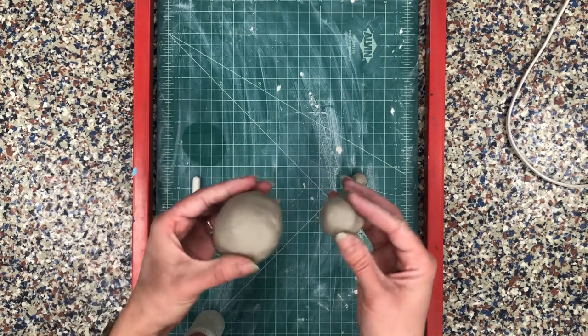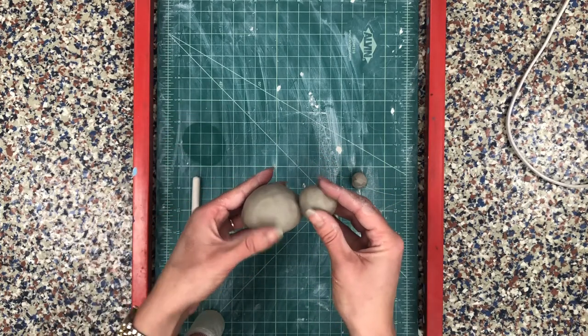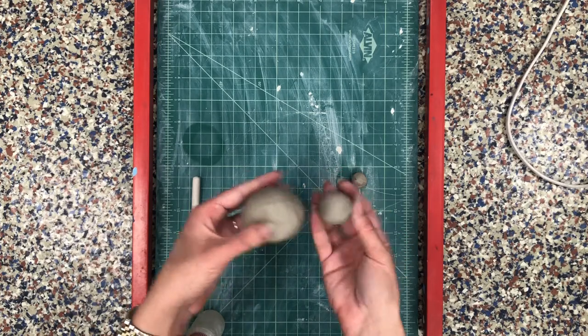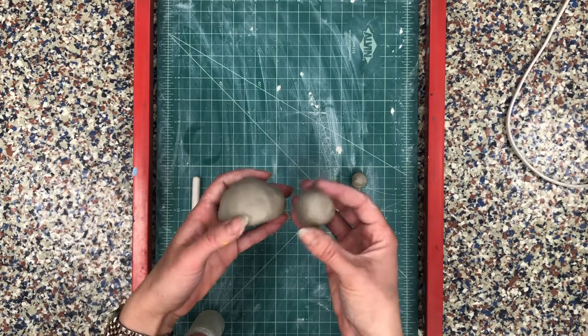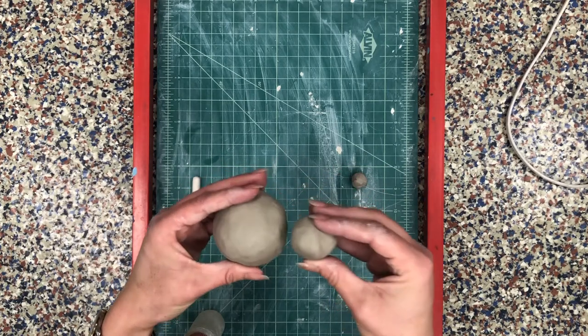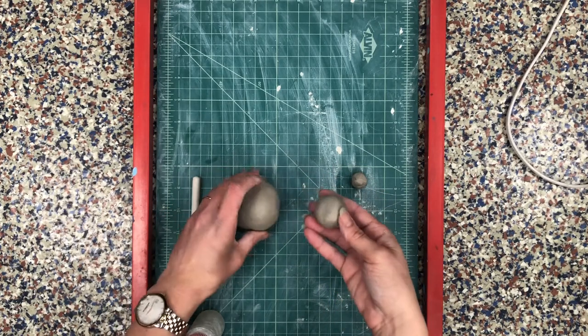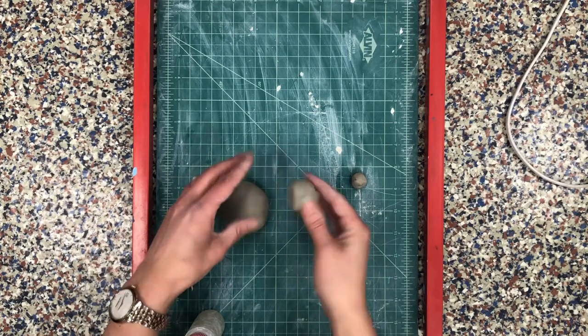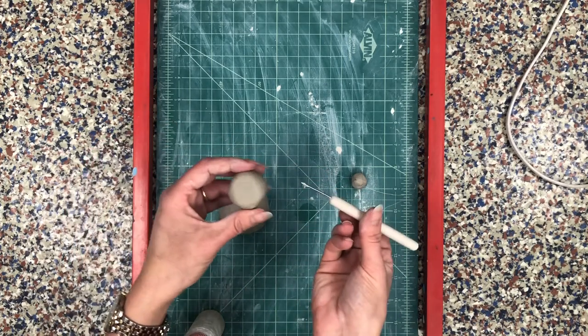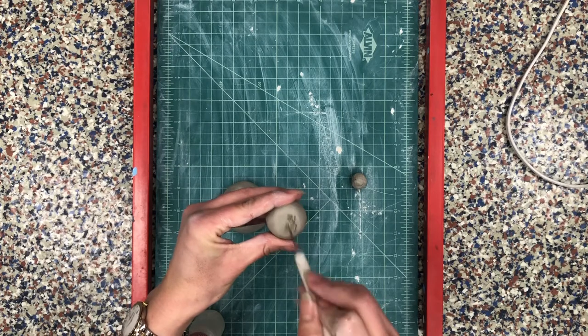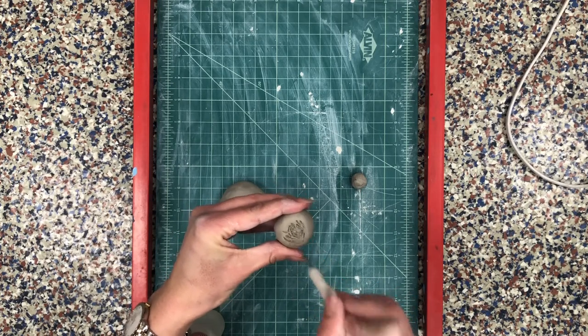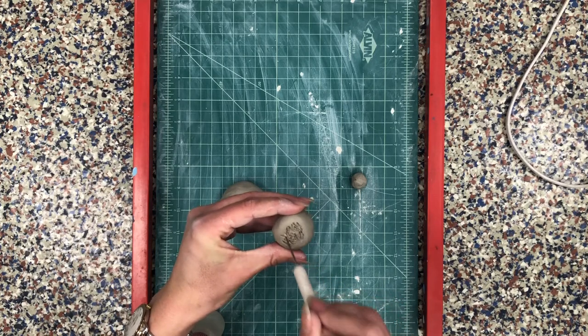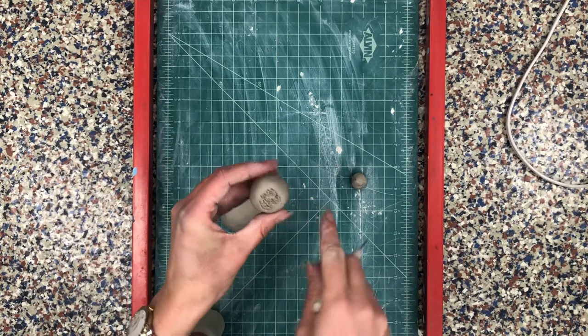All right now if I just stick the head onto the body like this it is going to fall off because when the clay dries it will no longer be sticky. So whenever I'm attaching two pieces of clay what I need to do is slip and score. So I'm gonna take my pointy clay tool and I'm going to scratch or score up the part of the clay that's going to stick onto the body. I'm just tearing it up really really good so it looks very messy.